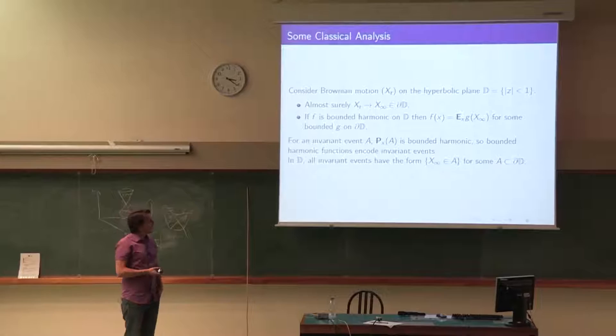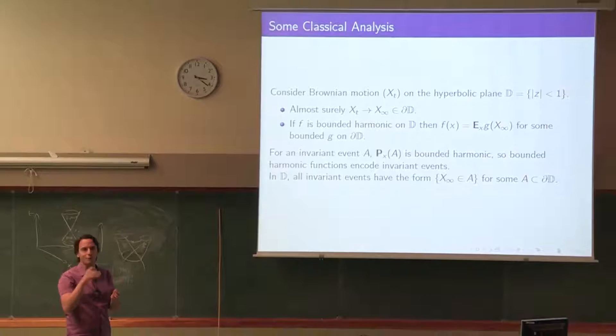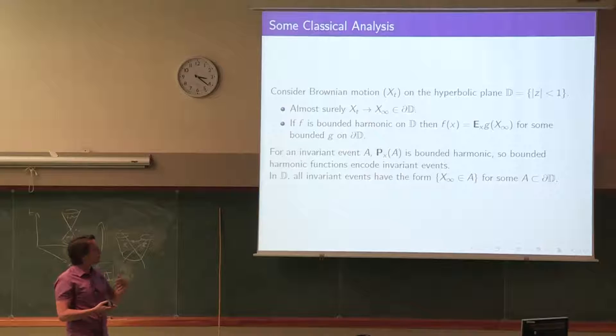We're interested in bounded harmonic functions because they somehow encode the long-term behavior of the random walk or diffusion. The long-term behavior and invariant events of a Brownian motion — where do you stick, where do you hit the boundary — it turns out these are all the invariant events. All other invariant events are generated by these forms of events.